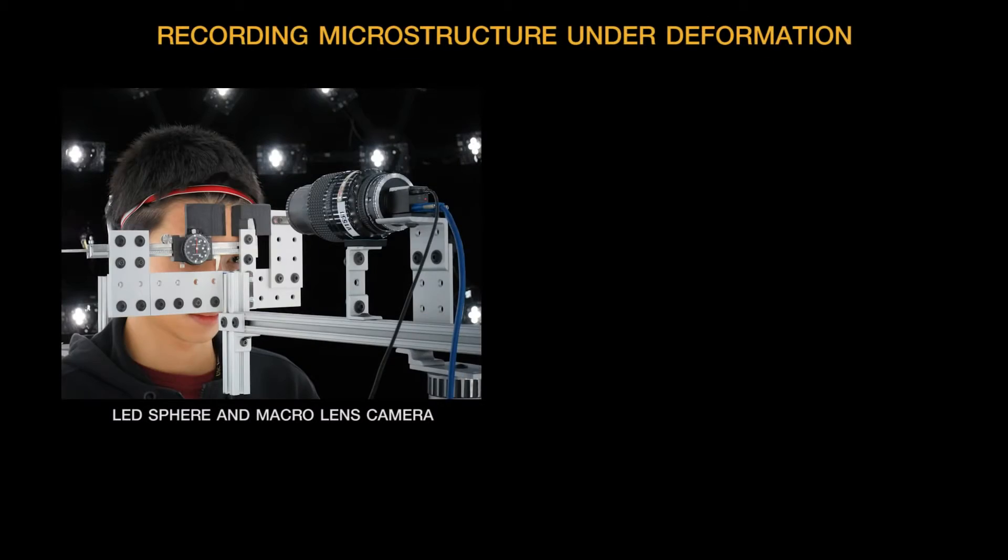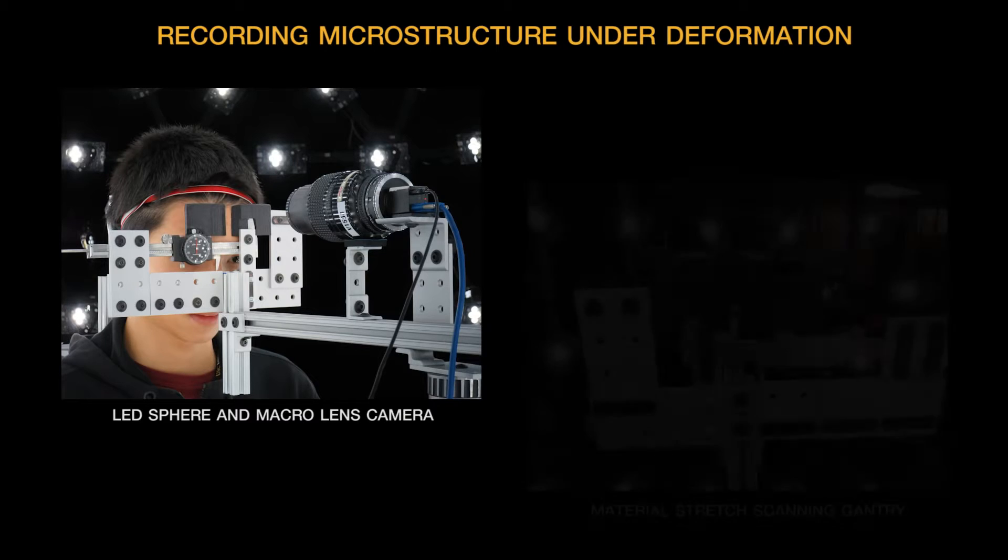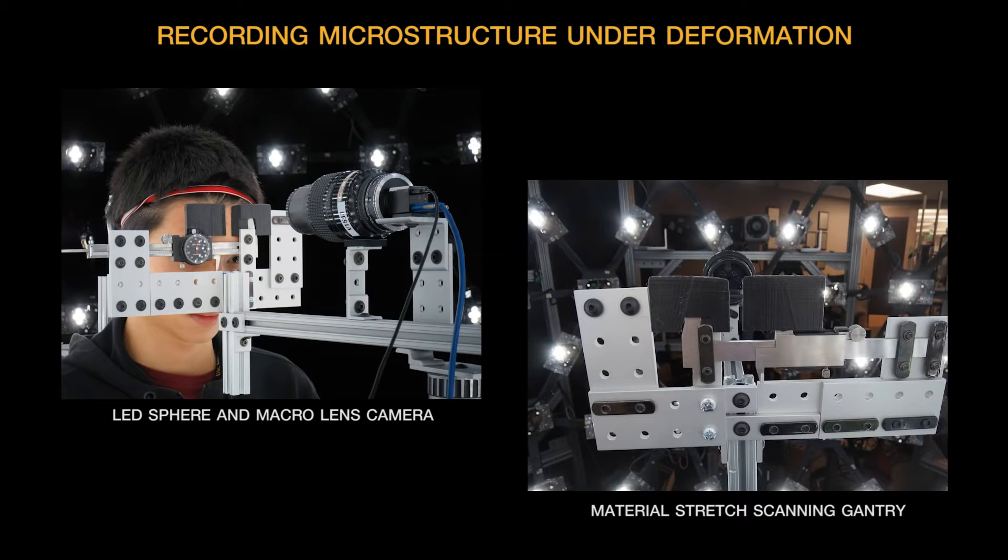In this work, we acquire the shape of deforming skin microstructure using polarized gradient illumination, macro photography, and a skin measurement gantry able to stretch and compress skin at measured intervals.